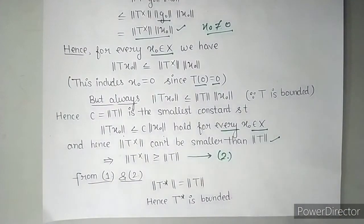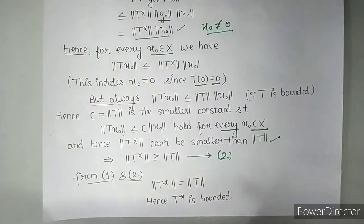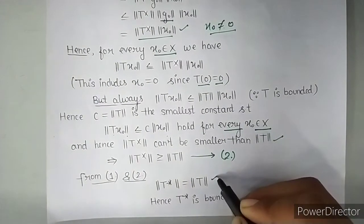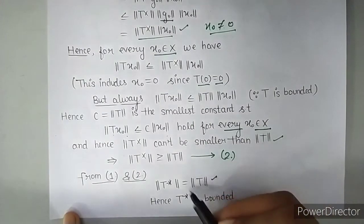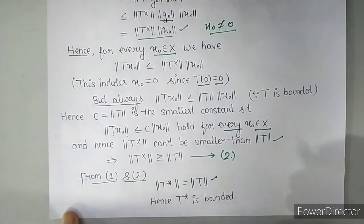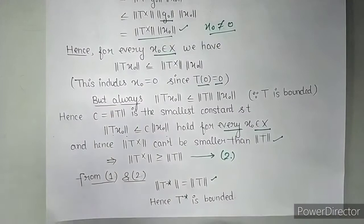So we had to prove this. We had already proved less than before. Now we have proved greater than. So by combining 1 and 2, we have that the norm of both is same. And since both norms are same, and T was bounded, so T star will also be bounded. So that's all for today, thank you.